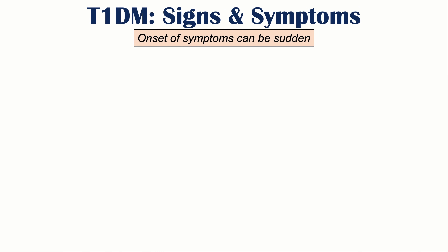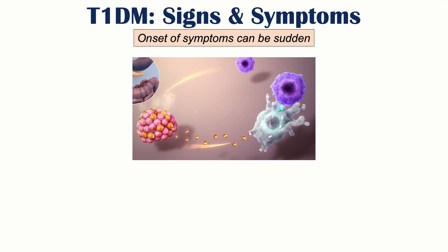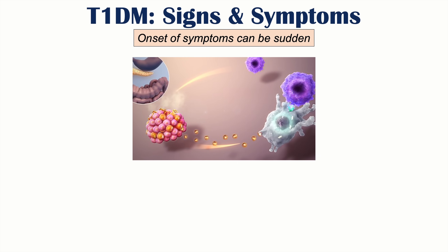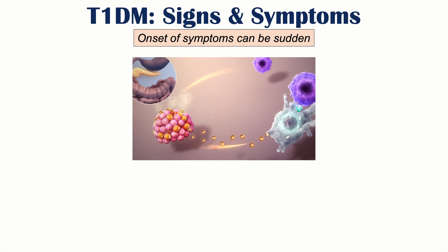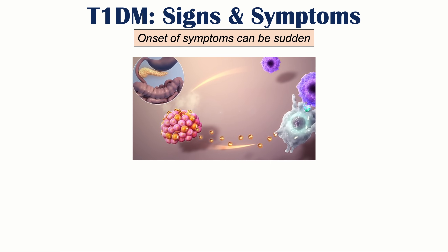The reason type 1 diabetes symptoms often present suddenly — as opposed to type 2 diabetes, where they occur insidiously — is because the immune system continues to attack and destroy those pancreatic beta cells. Eventually, once enough of those beta cells have been destroyed, usually representing around 90% of them, very high levels of glucose occur, leading to these signs and symptoms.